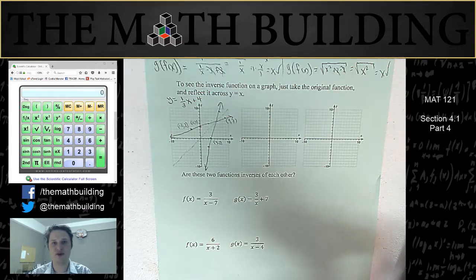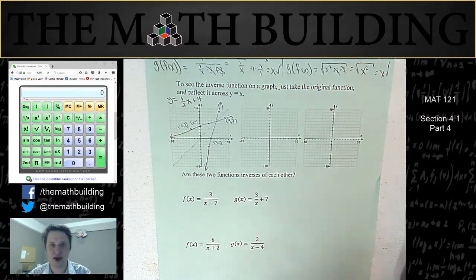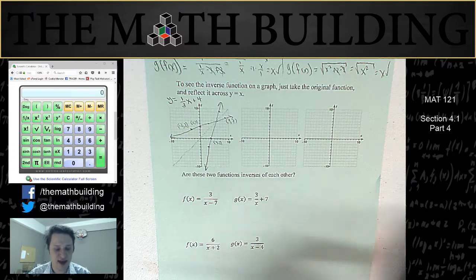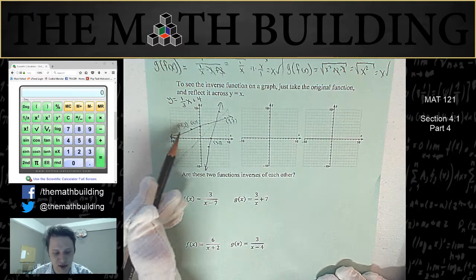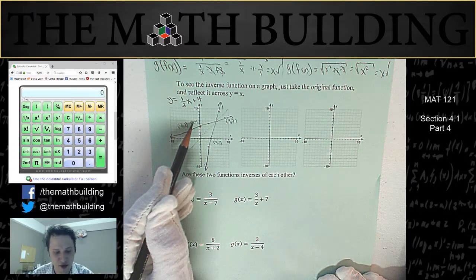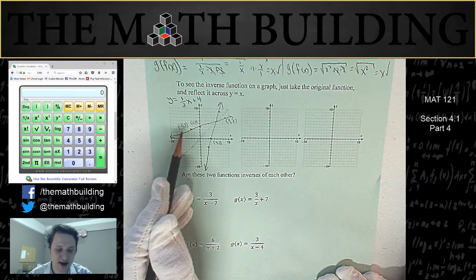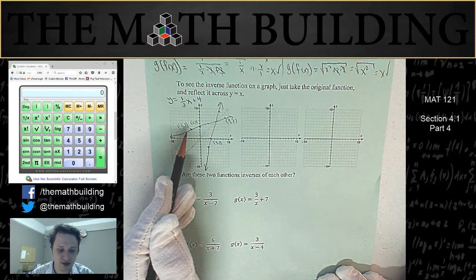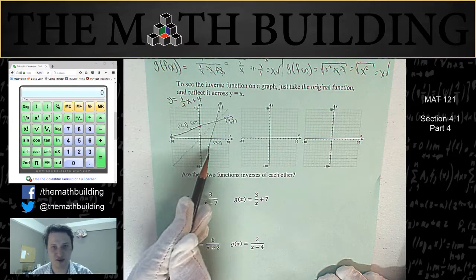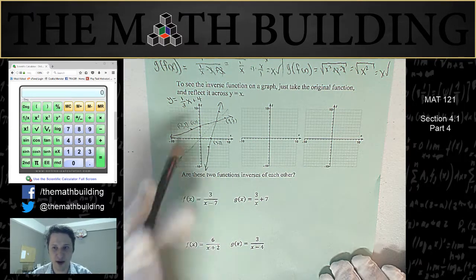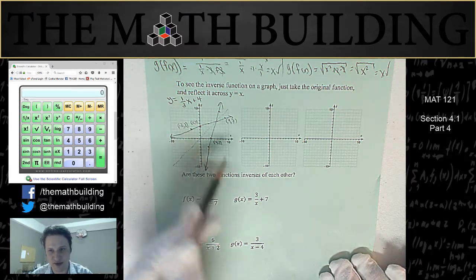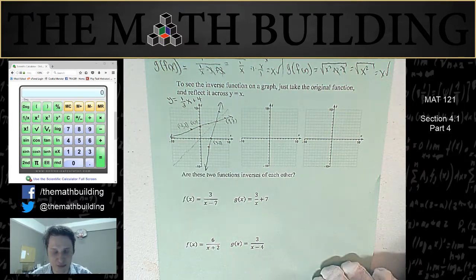Also notice that whenever an inverse crosses the regular function, that crossing will have to happen on the line x equals y, because that's the only way it's possible for it to be reflected. The reason is related to how we're flipping our inputs and our outputs. As you can see, 0, 4 went to 4, 0. Negative 3, 3 went to 3, negative 3. And so on — it creates this reflection pattern.